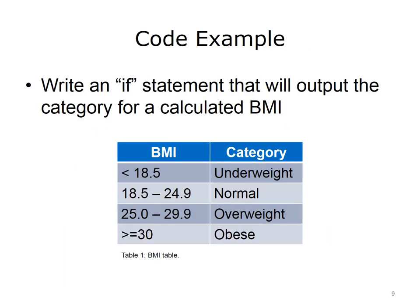This is an example that uses more complex conditional expressions. The last lecture presented a simple program that calculates the body mass index, or BMI, for a given weight and height. Now it is time to determine the weight category for BMI. Here is a table that gives the different weight categories for ranges of BMI. A BMI that is less than 18.5 is categorized as underweight. A BMI between 18.5 and 24.9 is normal. A BMI between 25 and 29.9 is overweight. Finally, a BMI greater than or equal to 30 is categorized as obese.